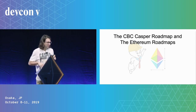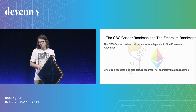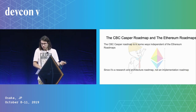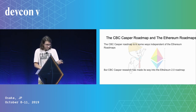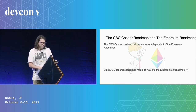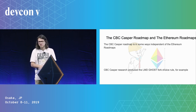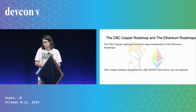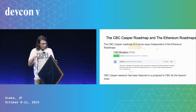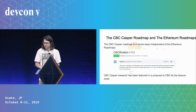Now let's talk about the relationship between the CBC-Casper roadmap and the Ethereum roadmaps. In some ways we're completely independent: we're a research roadmap, while the Ethereum roadmaps are roadmaps for deployment on Ethereum mainnet. But CBC-Casper research has made its way into Ethereum 2.0 — perhaps into Ethereum 3.0 as well. One of the most famous outputs is the latest-message-driven GHOST fork-choice rule featured in the Beacon Chain. Vitalik also made a proposal to add the CBC-Casper finality mechanism to the Beacon Chain.